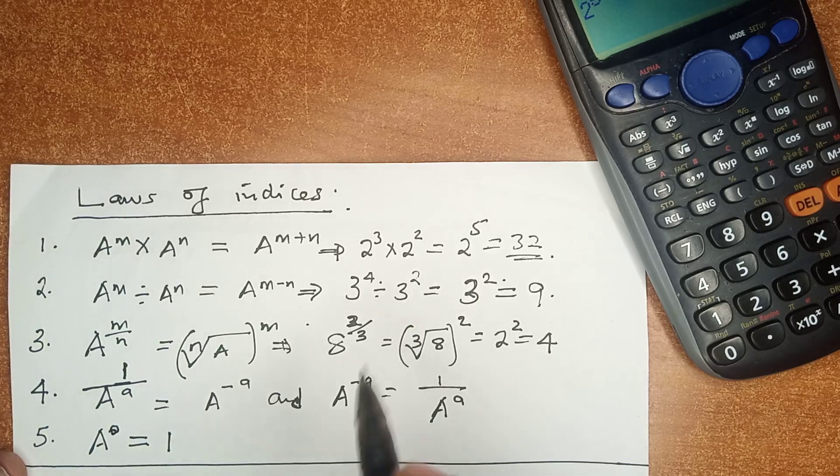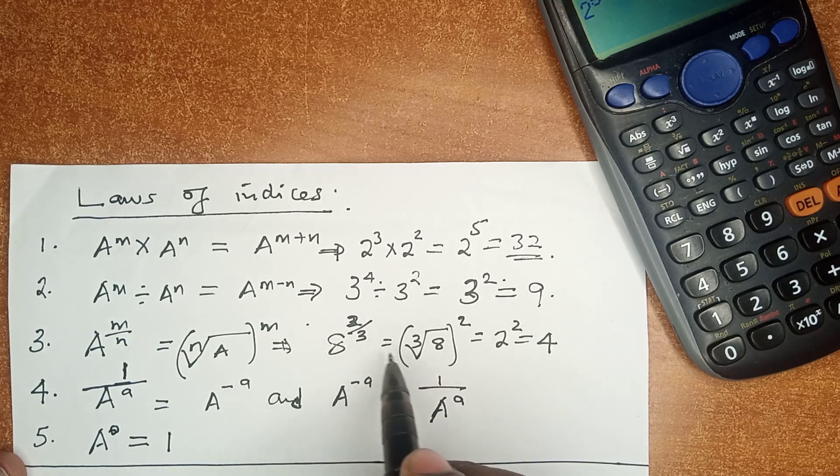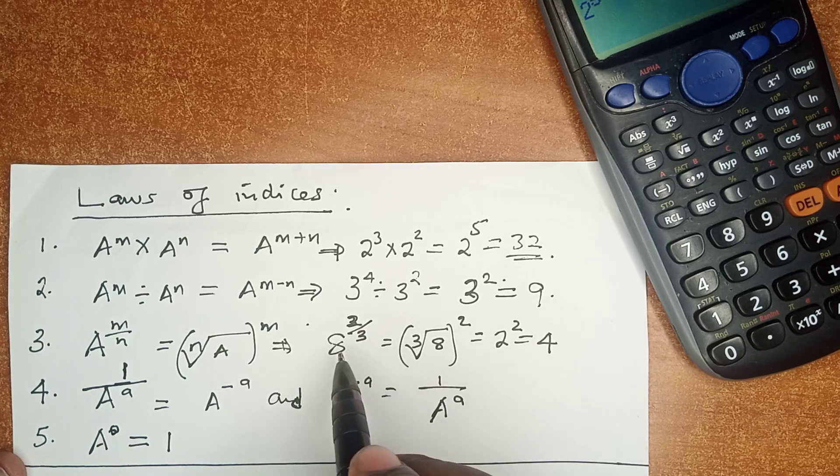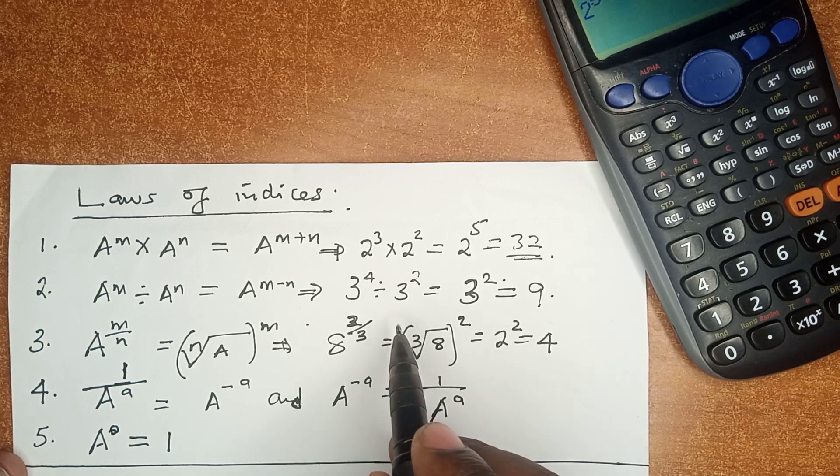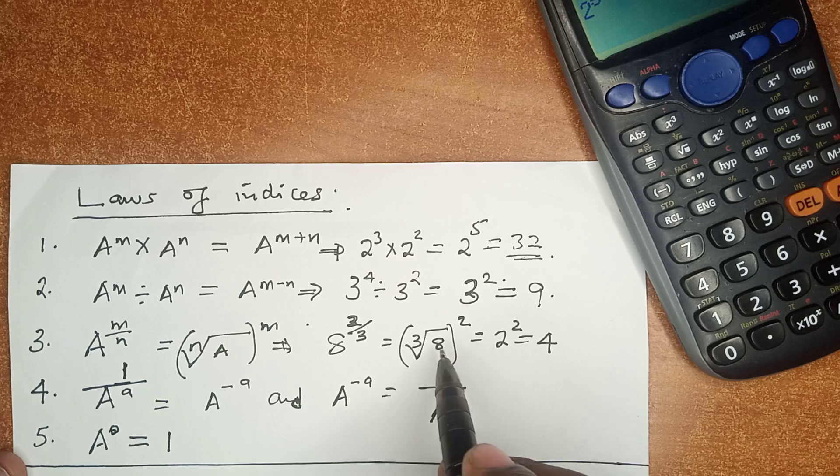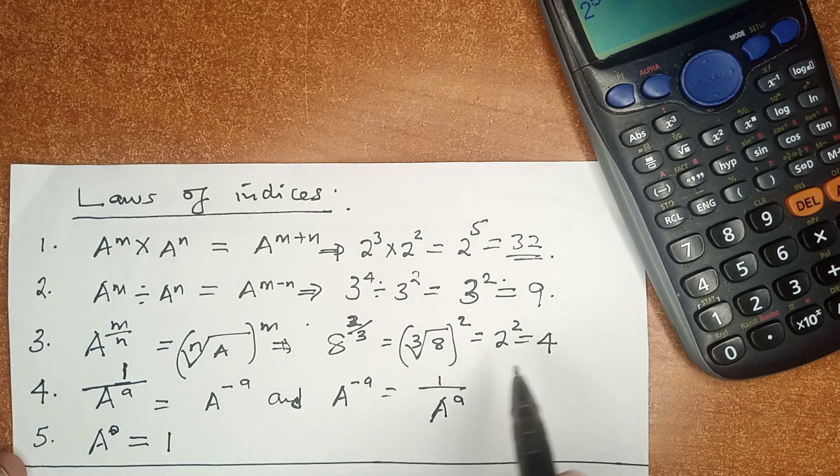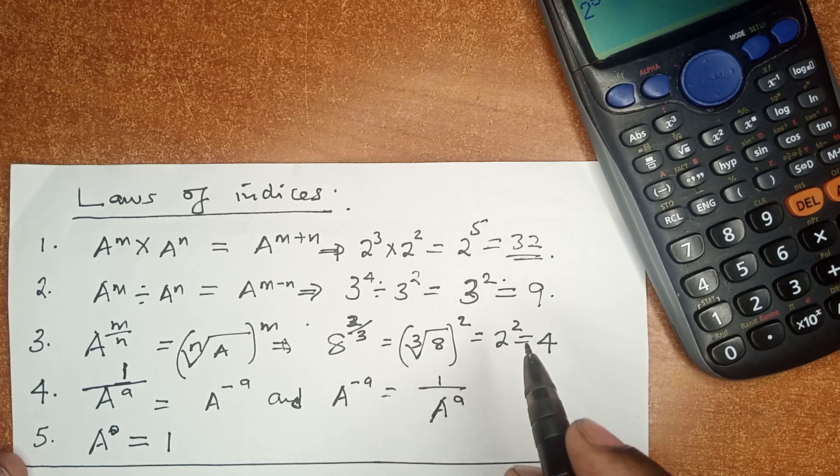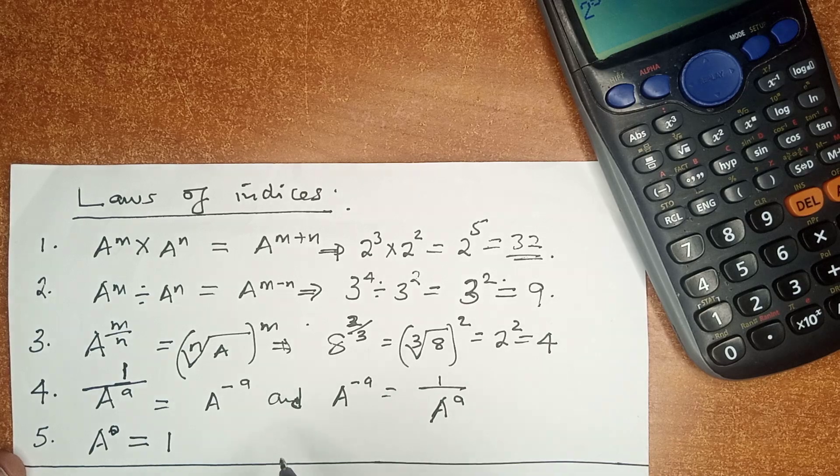If, for example, we have 8 raised to power 2 over 3, then we always go for the cube root or the third root of 8, after which we square it because 2 is at the numerator. The cube root of 8 is 2, then 2 squared is 4.